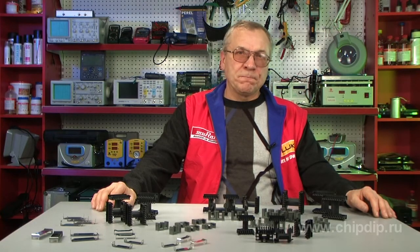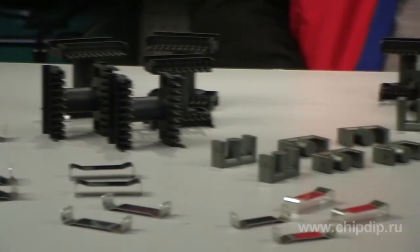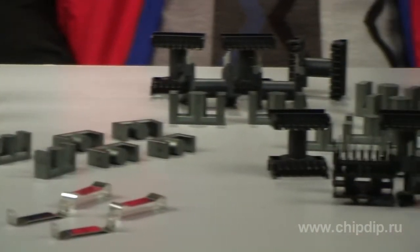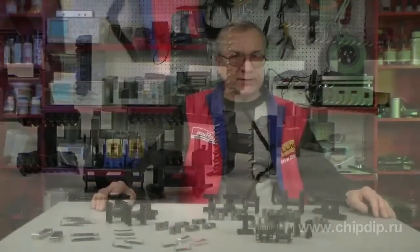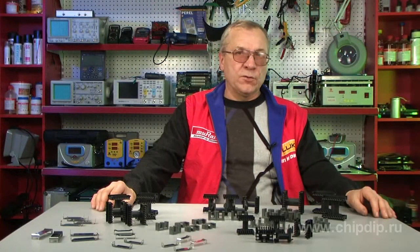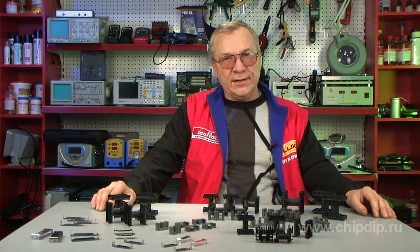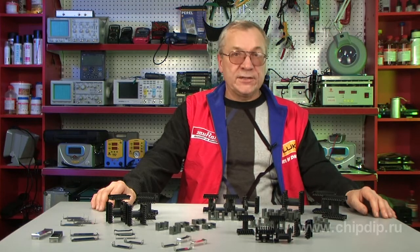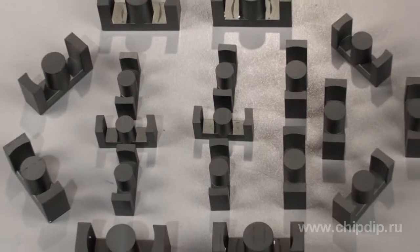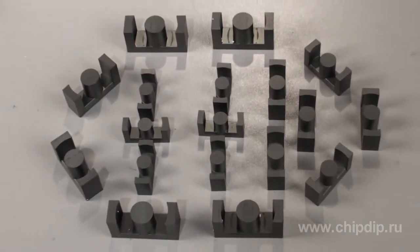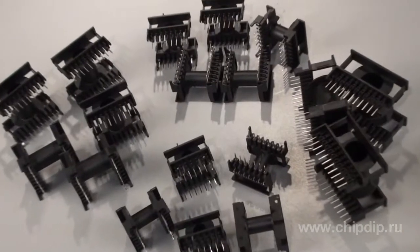The ETD series cores produced by EPCOS are E-shaped and have a cylindrical central rod. EPCOS offers seven dimensional types of ETD-paired cores with the minimum ETD-29 and the maximum ETD-59. The cylindrical central core provides for convenience of winding using thick wires and bent copper.